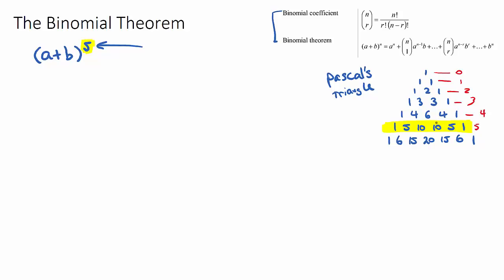If we look at the fifth row of Pascal's triangle and look at all of those numbers — 1, 5, 10, 10, 5, 1 — they are actually all of the coefficients (the number at the front) of our six terms in our expansion. These coefficients also link to the binomial coefficient n and r shown in the formula, which is actually linked to Pascal's triangle.